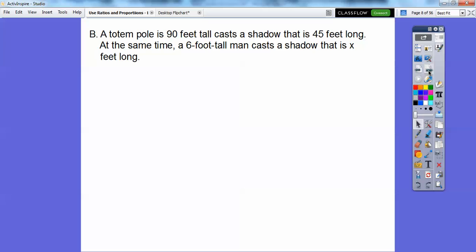Here's an example. So a totem pole is 90 feet tall and casts a shadow that is 45 feet long. At the same time, a six-foot tall man casts a shadow that is x feet long. So I guess we're looking for the length of the shadow of the man right here. So here's a picture right here. It's not drawn to scale, but at least it gives us an idea right here.